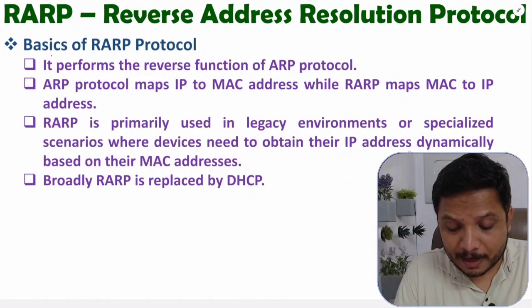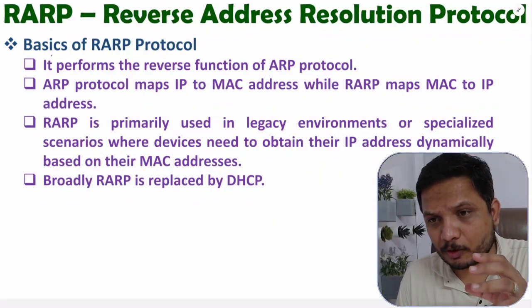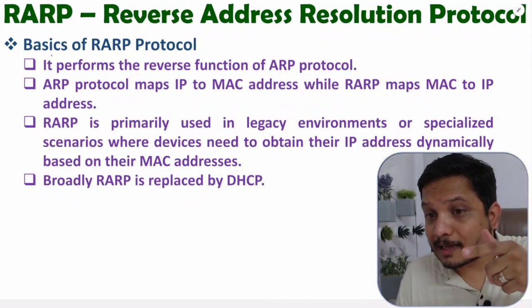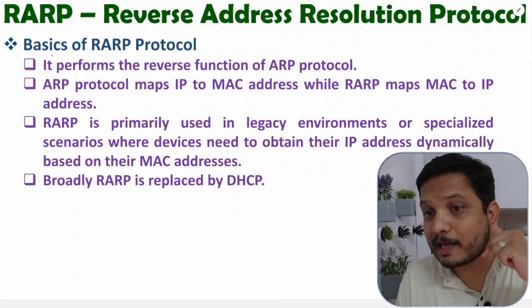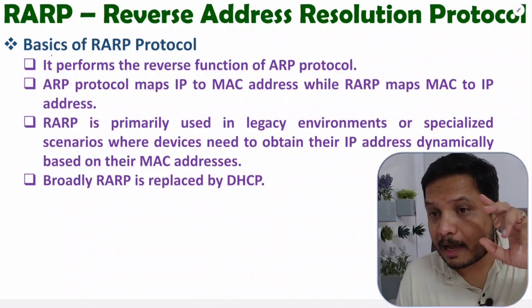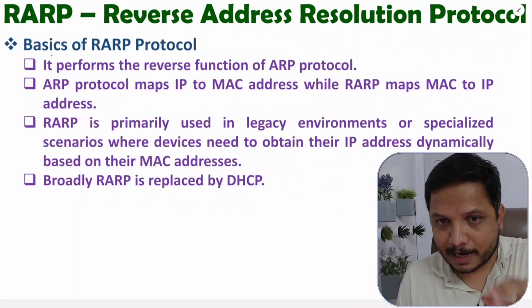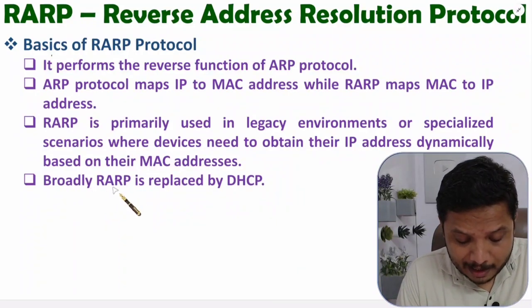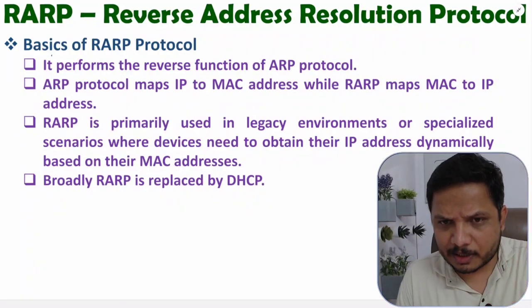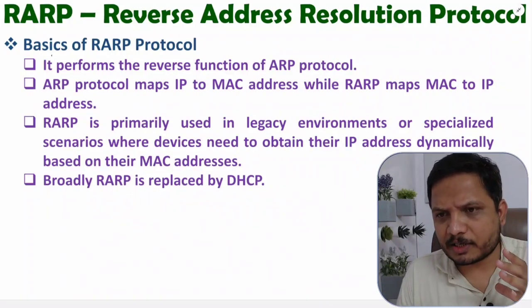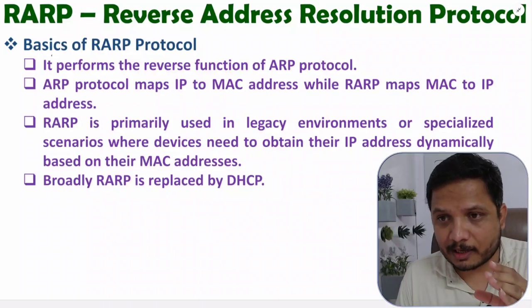RARP is primarily used in legacy environments or specialized scenarios where devices need to obtain their IP address dynamically based on their MAC address. The goal is to assign an IP address to a device that does not already have one. Broadly, RARP has been replaced by DHCP because of certain limitations, which we will discuss shortly.